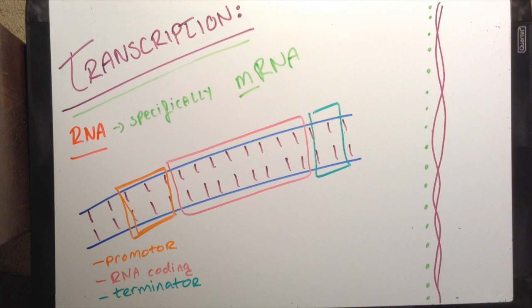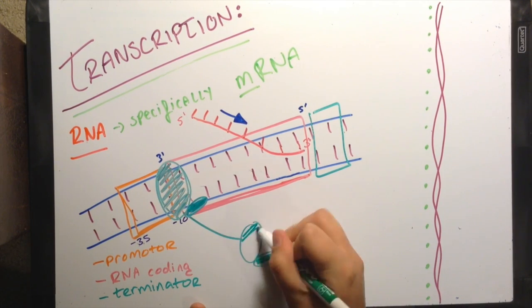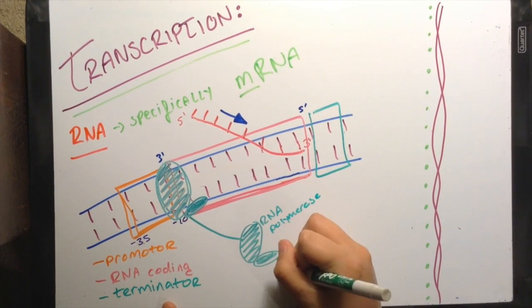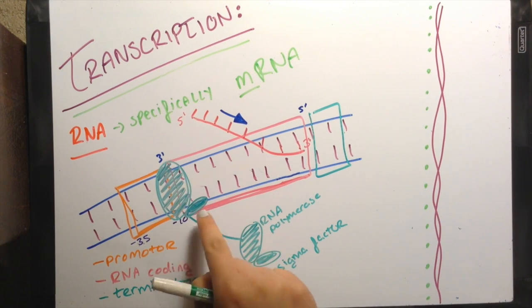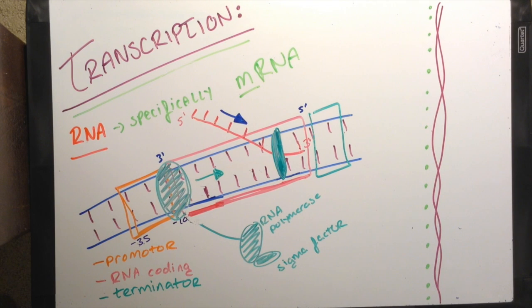Initiation: transcription will begin at the start site just beyond the promoter region. In bacteria, core RNA polymerase enzyme and a sigma factor will bind together to make a holoenzyme, which will recognize the promoter region and bind to it. It forms an open complex that allows the RNA nucleotides to attach to the DNA template and start forming an unconnected RNA strand.